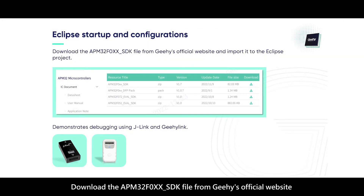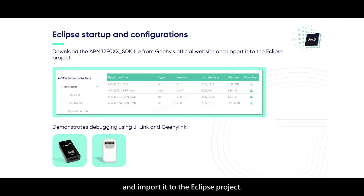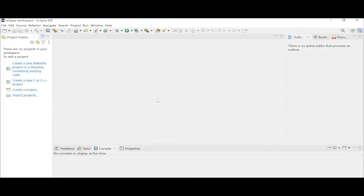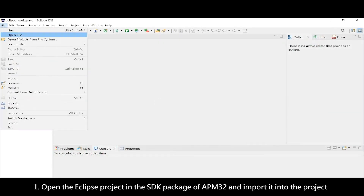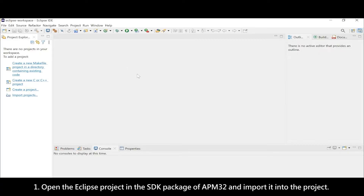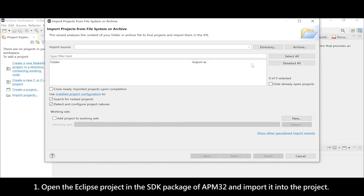Download the APM32F0 SDK file from GHI's official website and import it into the Eclipse project. I will demonstrate how to debug using J-Link and GHI-Link. Open the Eclipse project in the SDK package of APM32 and import it into the project.